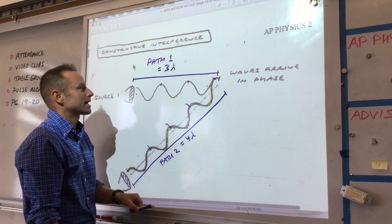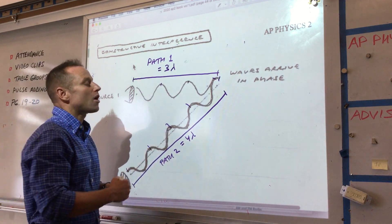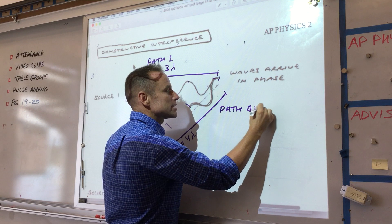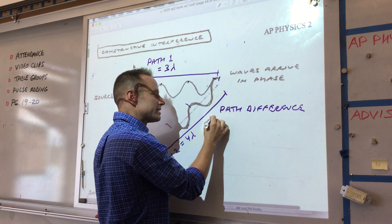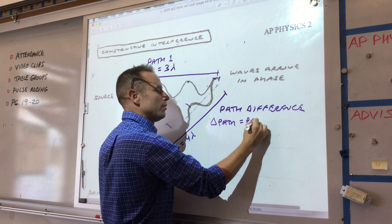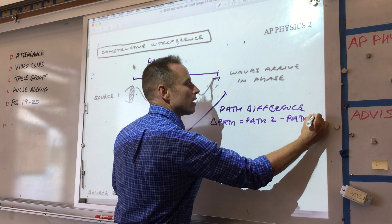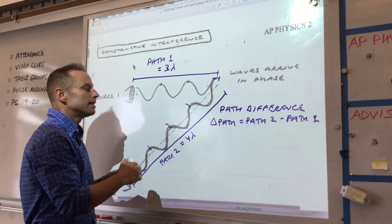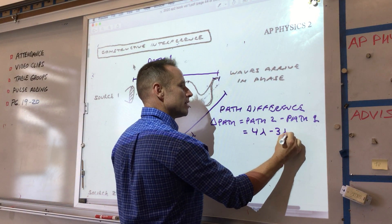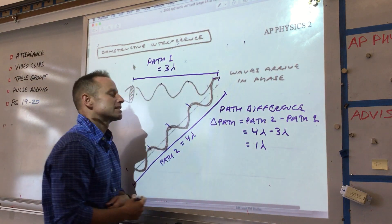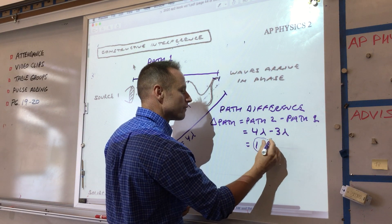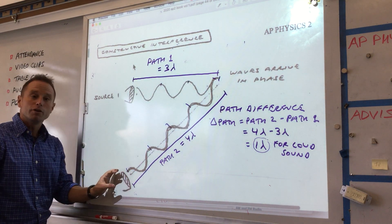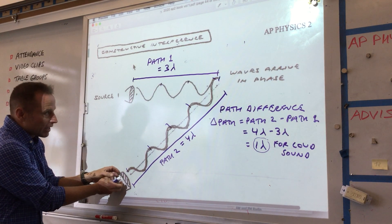What's key here is the path difference — this is the most important concept in this whole unit. The path difference, which I'll call delta path, is path two minus path one. It's how much farther one wave has to travel than the other. Path two minus path one is four lambda minus three lambda, which equals one lambda. The path difference is exactly one wavelength, and it's going to be loud.